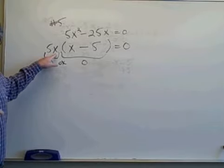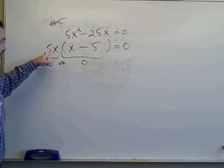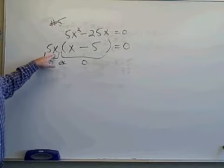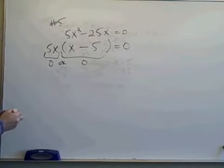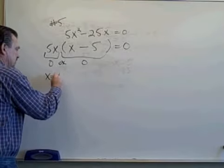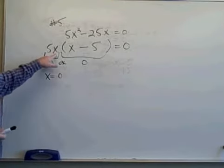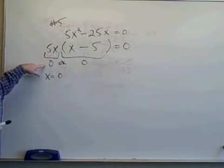So I ask myself, what could I put for x here that when I multiplied it times 5 would give me 0? Well, that's a pretty obvious one, isn't it? x would be 0. If x was 0, 5 times 0 would make 0.